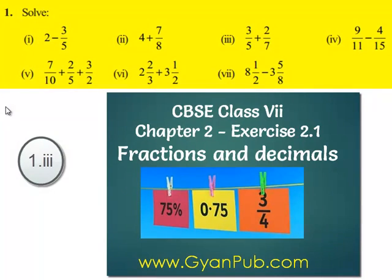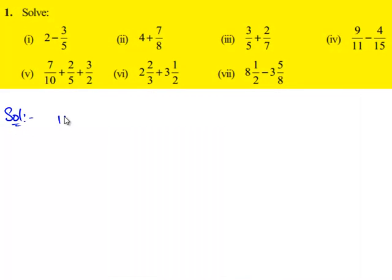Now let us solve third bit in the question. So we need to solve 3 by 5 plus 2 by 7.